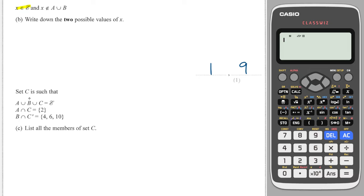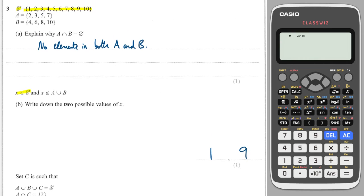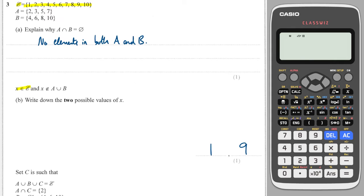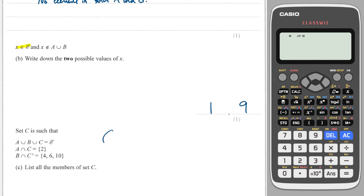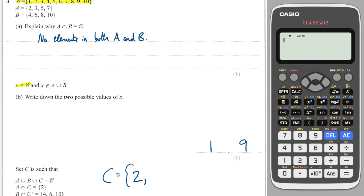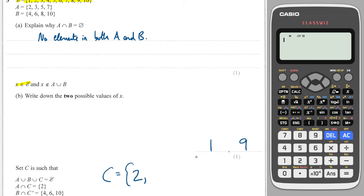Okay, next question. It says set C is such that A or B or C is the universal set. So that means that each number in yellow is in one of A, B or C. And A intersection C is equal to 2. So that means that A and C share the element 2. So that means C must have 2 in it. And this says that B intersection not C is equal to 4, 6 and 10. So that means that 4, 6 and 10 can't be in C.